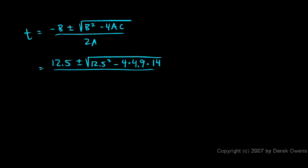And all this is divided by 2a. A was 4.9, so 2a is 9.8. Now here's what you need to take note of. 12.5 squared, I can compute that in 4 times 4.9 times 14. This quantity, 4 times 4.9 times 14, ends up being bigger than 12.5 squared. We end up with a negative number under our radical here.